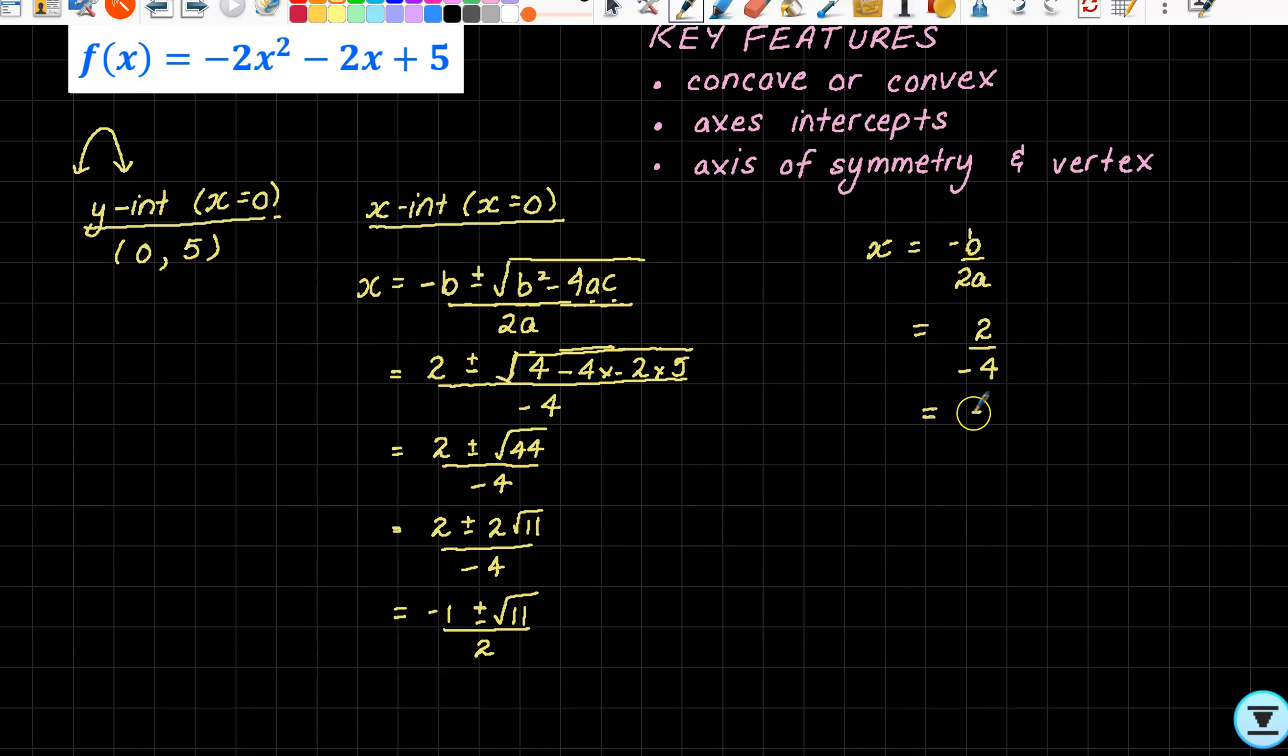When I pop this in: minus b becomes -(-2) = 2, all over 2 times a which is -4, and so we get -1/2 as our axis of symmetry, which I'm not surprised at because it's this bit here. x equals -1/2, so it all connects.